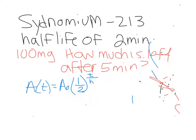Okay, so there's our formula. So if we originally have 100 milligrams of Sidnomium, so it's our A naught, 100, times a half. How much is left after five minutes? So five is our time. And our half-life is two minutes. So five over two. So we're just solving an equation like this.